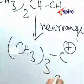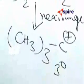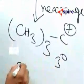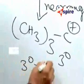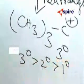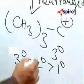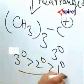Why? Because this is a tertiary carbocation. The order of stability of carbocation is tertiary greater than secondary, greater than primary. So a tertiary carbocation is the most stable carbocation.